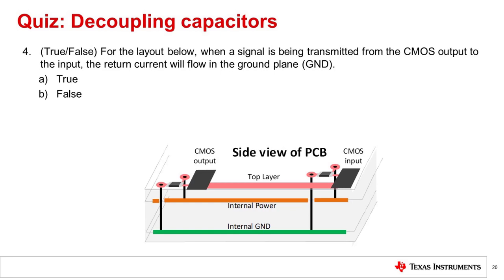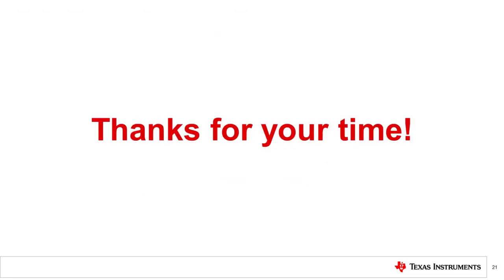Question 4. True or False? For the layout shown, when the signal is being transmitted from the CMOS output to the input, the return current will flow in the ground plane. The correct answer is False. The return current will always flow in the plane adjacent to the trace. In this example, the power plane is adjacent to the signal trace, so the return current will flow in the power plane. That's all for today's video. Thanks for watching.